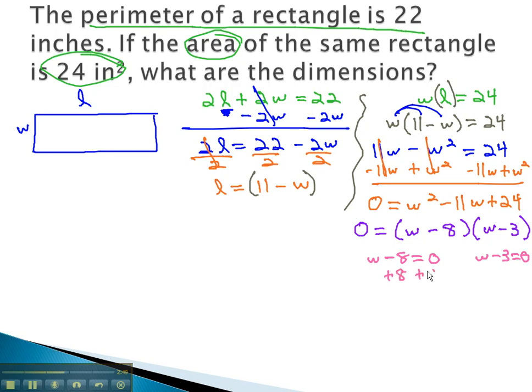Adding 8 to the first equation tells us our first choice for W is 8, and adding 3 to the second equation tells us our second choice for W is 3.